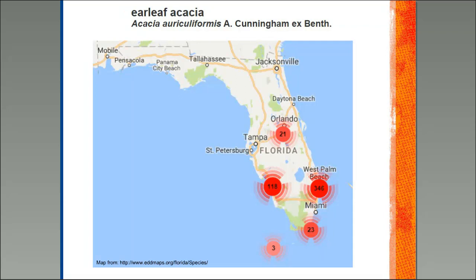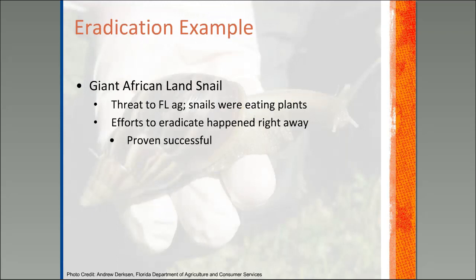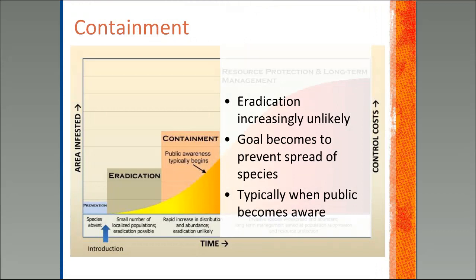One successful example of eradication is the giant African land snail. As you can see in the background, it's quite a large snail that was posing a major threat to crops in South Florida because they were munching away at vegetation. Efforts started right away to eradicate them and so far it has proven to be a successful eradication effort.